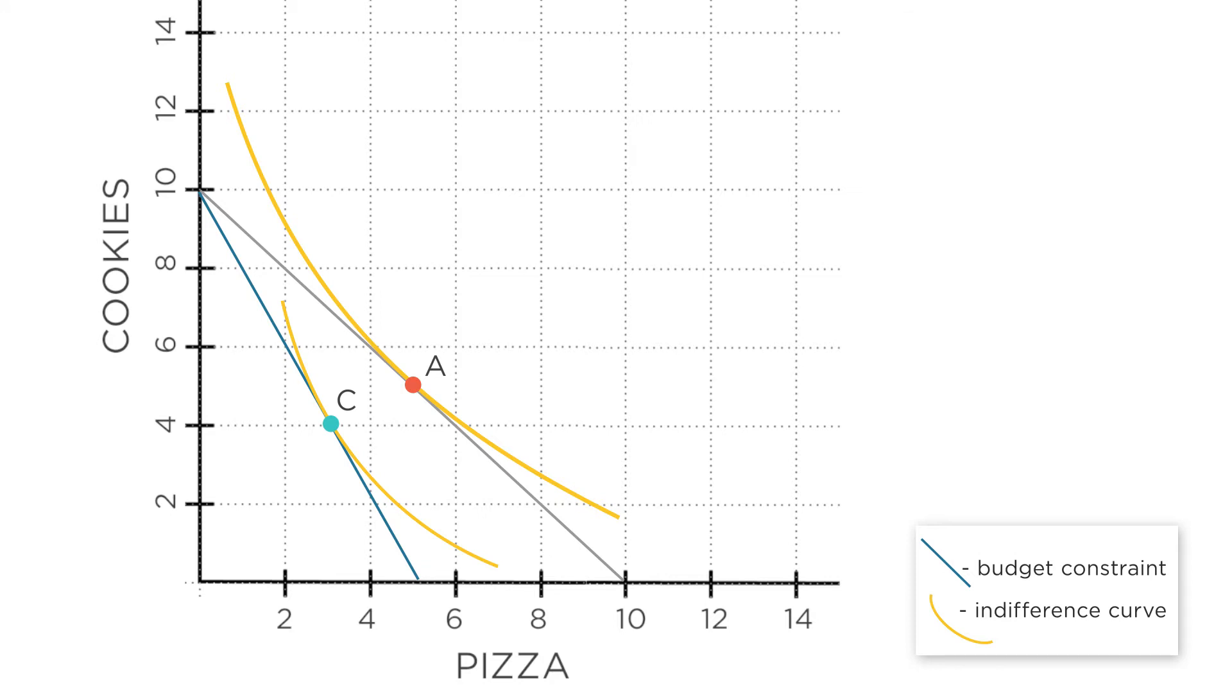First, draw an imaginary budget constraint where utility's constant, but at the new price of pizza. This puts you at B. As expected, the substitution effect means that if pizza gets more expensive, you consume less.